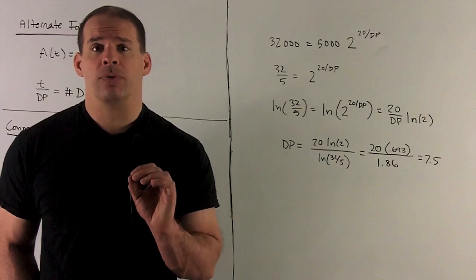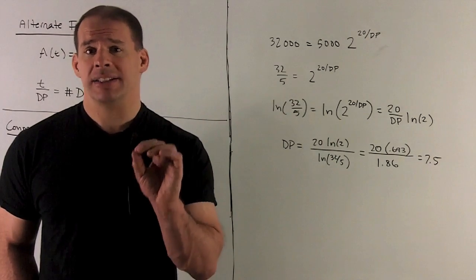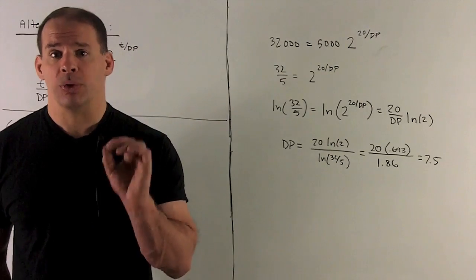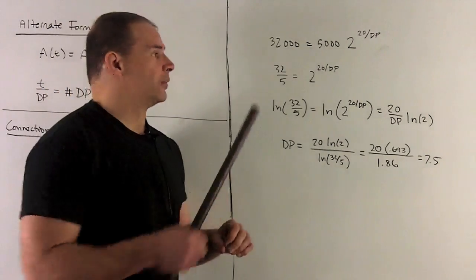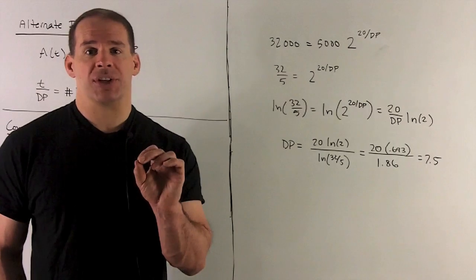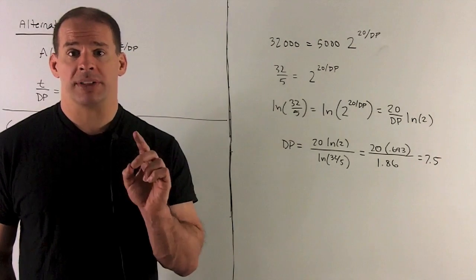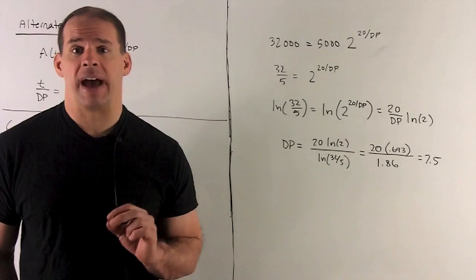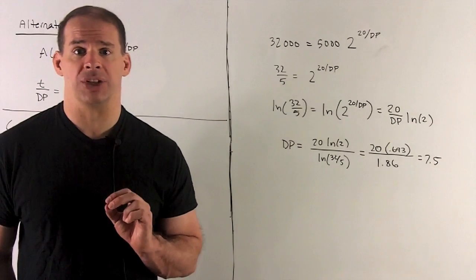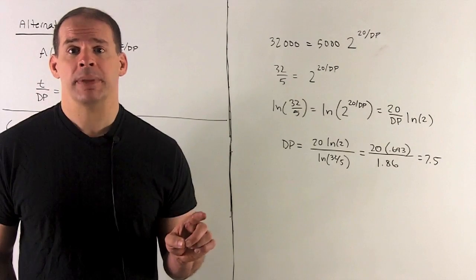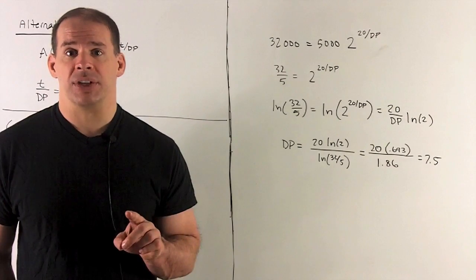The advantage of the new formula is I can go straight to calculating doubling period. So our first step here, we rewrite our equation: 32,000 equals 5,000, two to the 20 over the doubling period. So we know at time 20, we have 32,000 fish in our population. Same procedure, divide by 5,000, take the natural log of both sides. Now note, I have base two, but taking the natural log is going to be just fine.